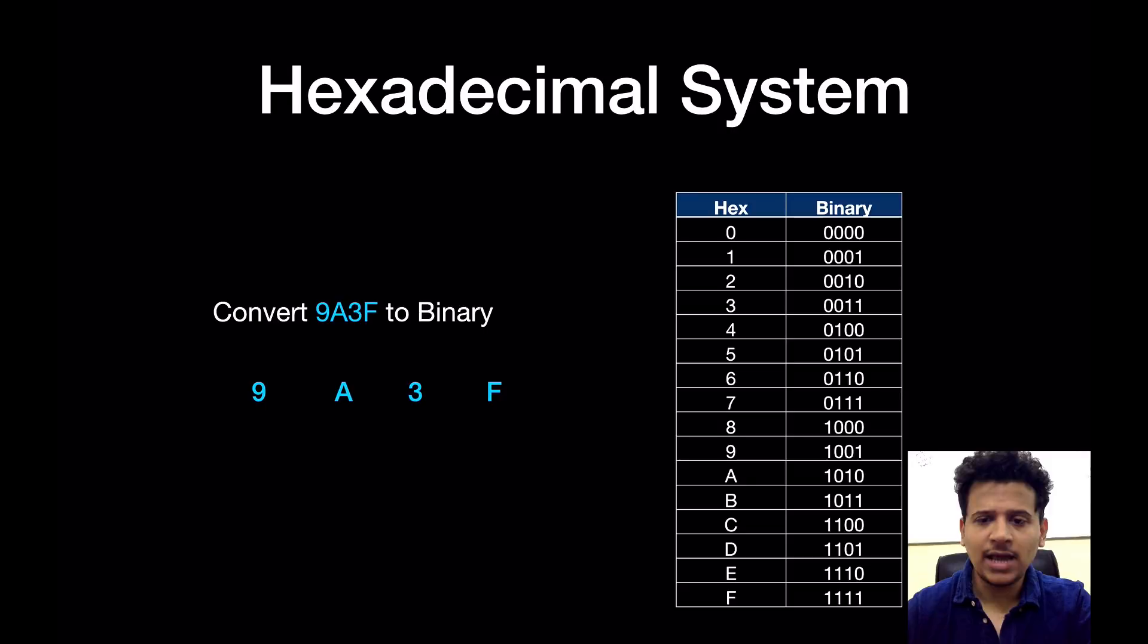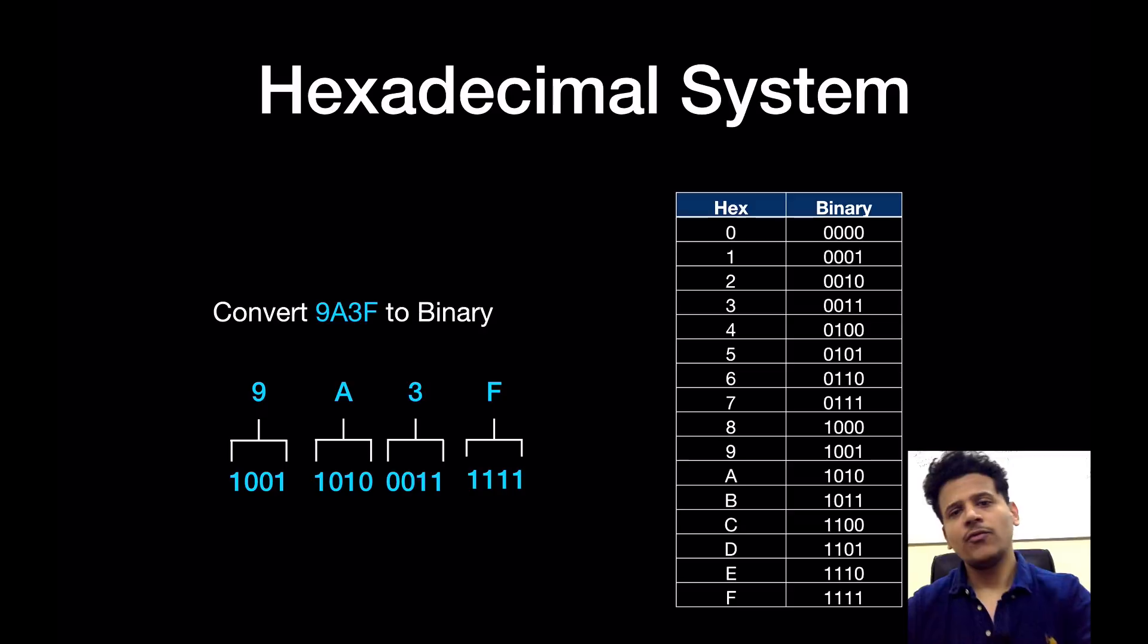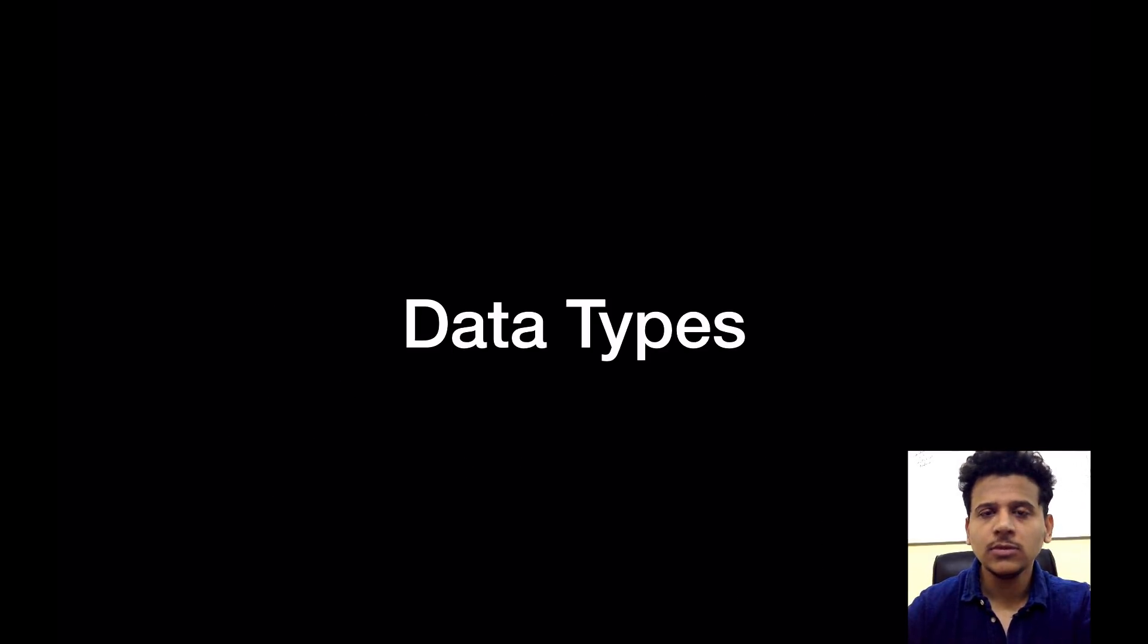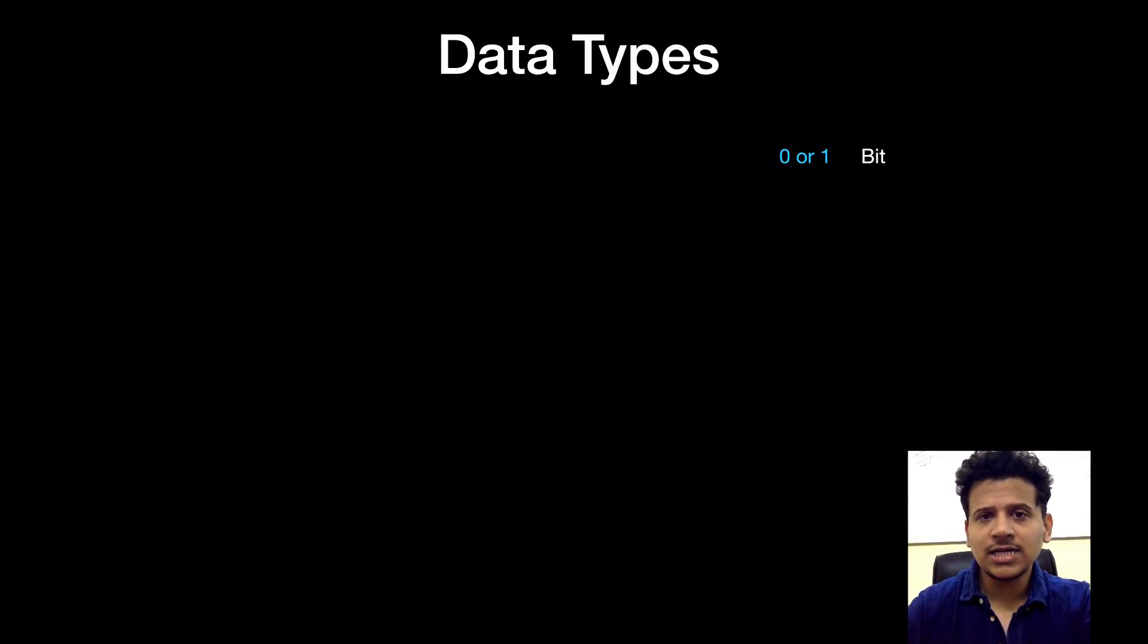Now we'll look at how to convert hexadecimal number to its binary equivalent. We will look at the table once again. 9 belongs to 1001, A belongs to 1010, 3 will convert to 0011, and F will convert to 1111. This is how we can convert a binary number to its hexadecimal number and hexadecimal number to a binary number.